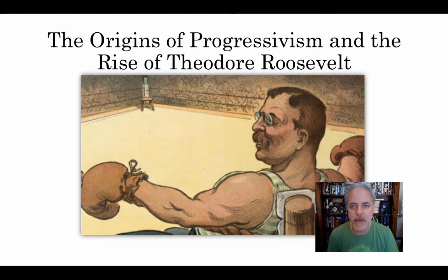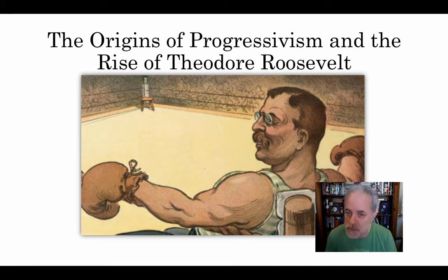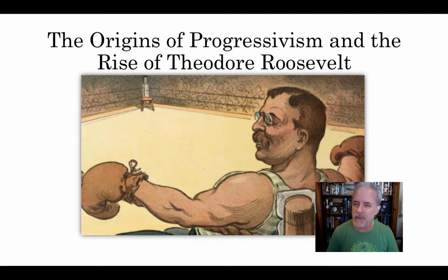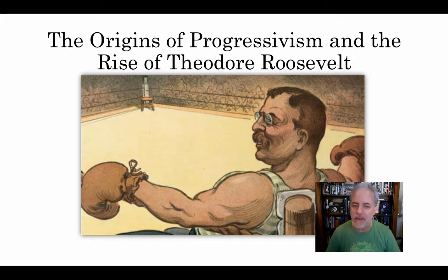This is the first of three parts in a three-part lecture called The Origins of Progressivism and the Rise of Theodore Roosevelt. Your book talks about progressivism, but one place where it really lacks is that it doesn't talk about the origins of progressivism — the intellectual and philosophical origins. Why did these people become reformers, progressives? Why did they try to transform the country in the ways that they did between about 1900 and 1920?